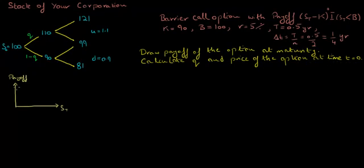Let's start by drawing the payoff. As the stock price increases and goes above the strike price K, the payoff begins to get positive and equals the difference between the terminal stock price minus the strike price, until it hits the barrier B. Once the barrier is reached, the option ceases to exist and pays off nothing.